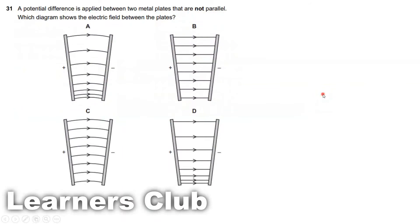Question 31. A potential difference is applied between two metal plates that are not parallel. Which diagram shows the electric field between the plates? If the distance is shorter, the greater the electric field strength, meaning the spacing of electric field lines should be closer. So the field lines cannot be equally spaced because the plates are not parallel. Reject options which have parallel electric field lines — one option with equidistance spacing is not the answer.